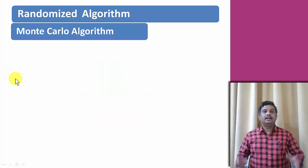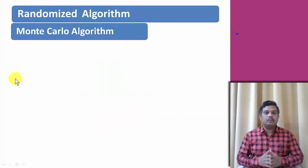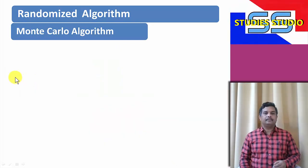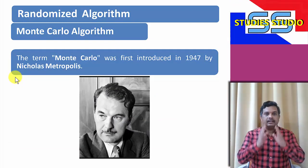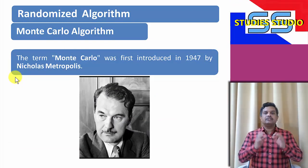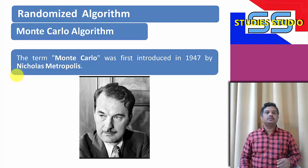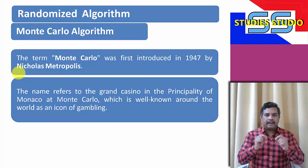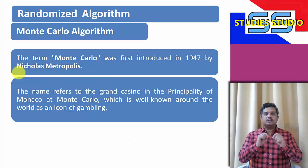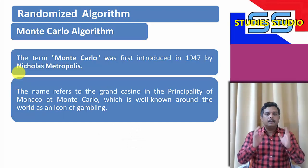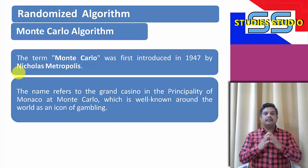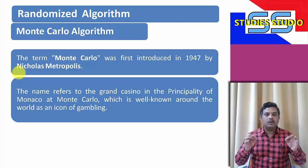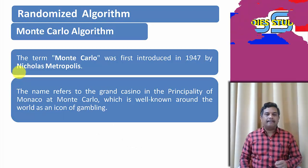Let us discuss the Monte Carlo algorithm. The term Monte Carlo was first introduced in 1947 by Nicolas Metropolis. The name refers to the Grand Casino in the principality of Monaco at Monte Carlo, which is well known for gambling.